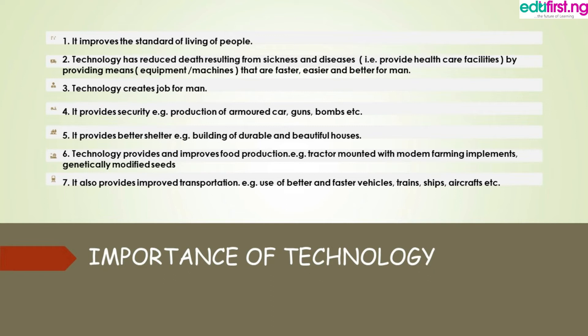Technology has created jobs — more companies are springing up, technology companies that create things for people, like your washing machine. It also provides security: better cars, stronger cars, armored cars. It provides shelter — in the old days, cavemen used to live inside caves, which is very dangerous because wild animals could enter seeking shelter. Technology improves food production by providing tractors and modified seeds that help get better production. It also provides improved transportation.